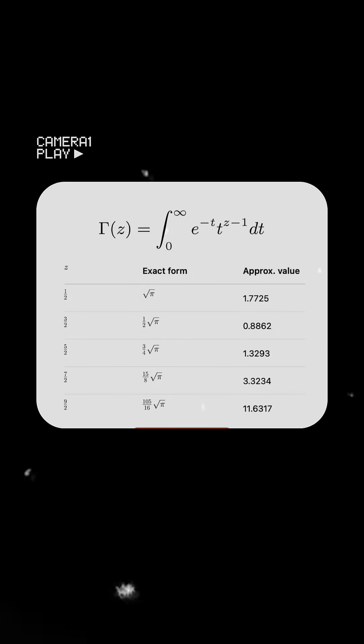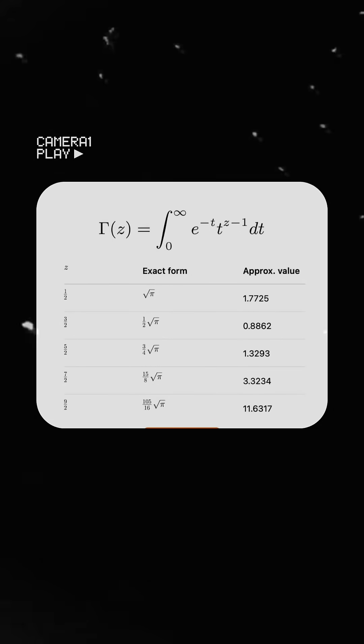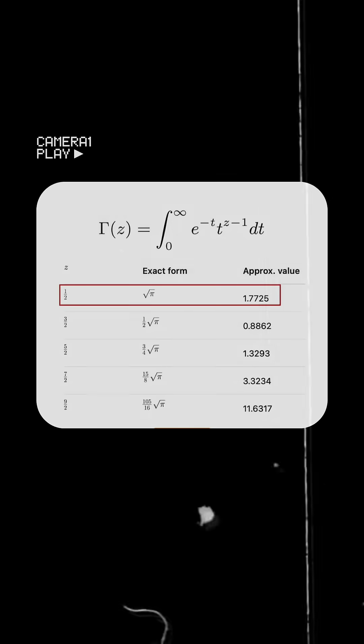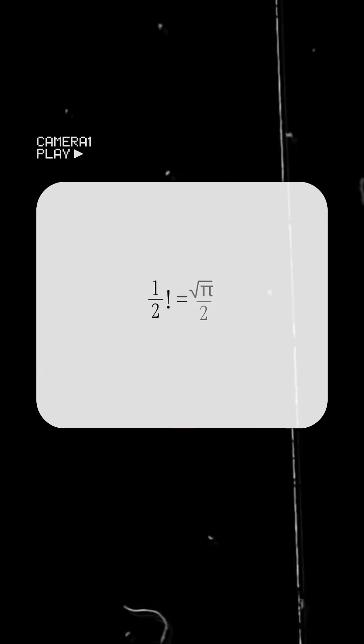Yes, and from the gamma function table, the value of the gamma function of 1/2 is square root of π. So 1/2 factorial is √π/2.